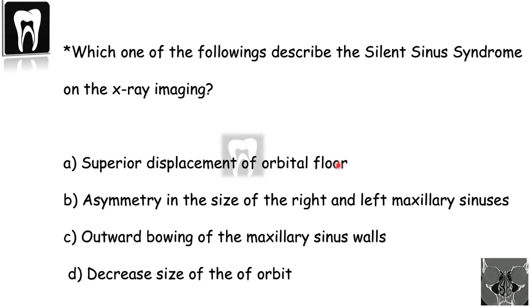So let's see the question again — describing the silent sinus syndrome on x-ray. A is incorrect because we have an inferior displacement of the orbital floor, not superior. B is correct because we have asymmetry due to size reduction. C is incorrect because we have inward bowing of the walls, not outward bowing. And D is incorrect due to the inferior displacement of the orbital floor and increased orbital content.